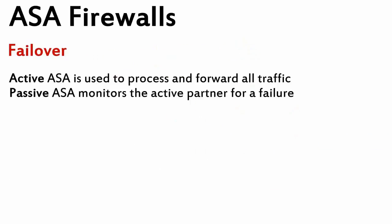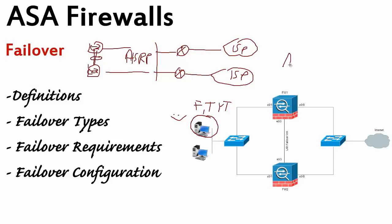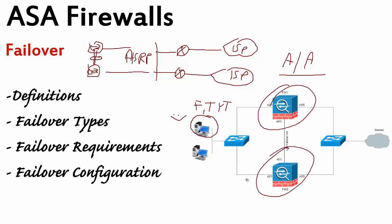We have two main failover types, or modes: Active/Active and Active/Standby. An active ASA is a firewall that is forwarding our traffic at the moment — that's the basic definition. The passive one is waiting for the primary to fail. In Active/Active, both firewalls forward traffic.